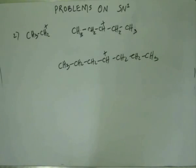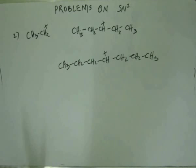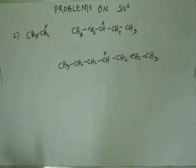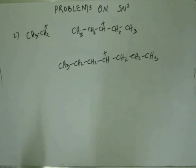We have prepared ourselves to decide the stability of different intermediates, and for that we have studied different effects that actually determine the stability of those intermediates. That includes aromaticity, resonance, hyperconjugation, inductive effect, and other effects like field effect and harsh effect that we have already seen. To start with, we will first look at resonance.